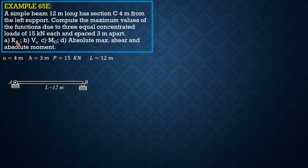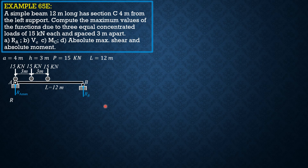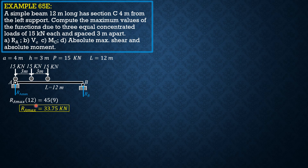For maximum reaction at A, the arrangement is that the leftmost load should be over the support. We compute RA — this corresponds to RA max. Since the loads are equally spaced and equal, the resultant is 3 × 15 = 45 kilonewtons, at a distance of 12 − 3 = 9 meters from B. Taking moments about B: RA max × 12 = 45 × 9, so RA max = 33.75 kilonewtons.